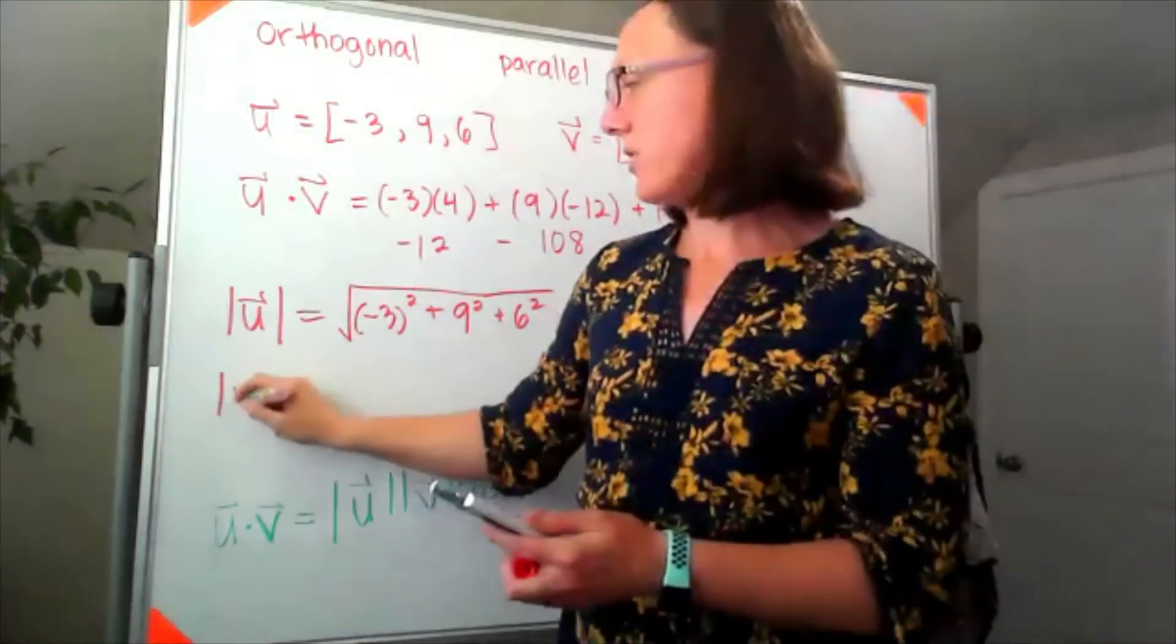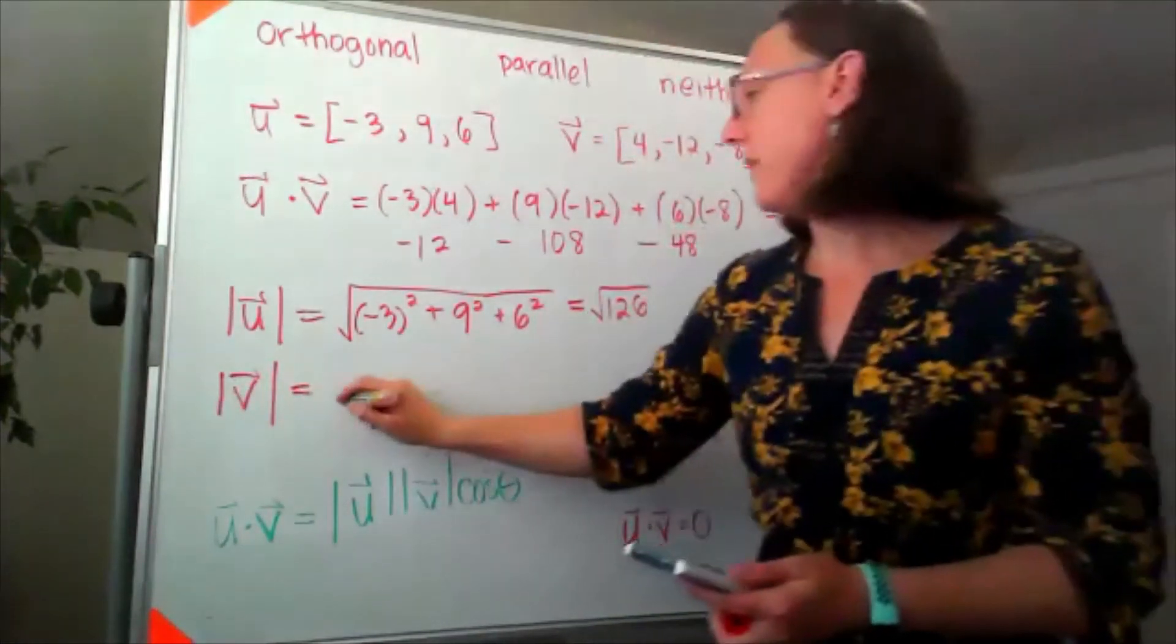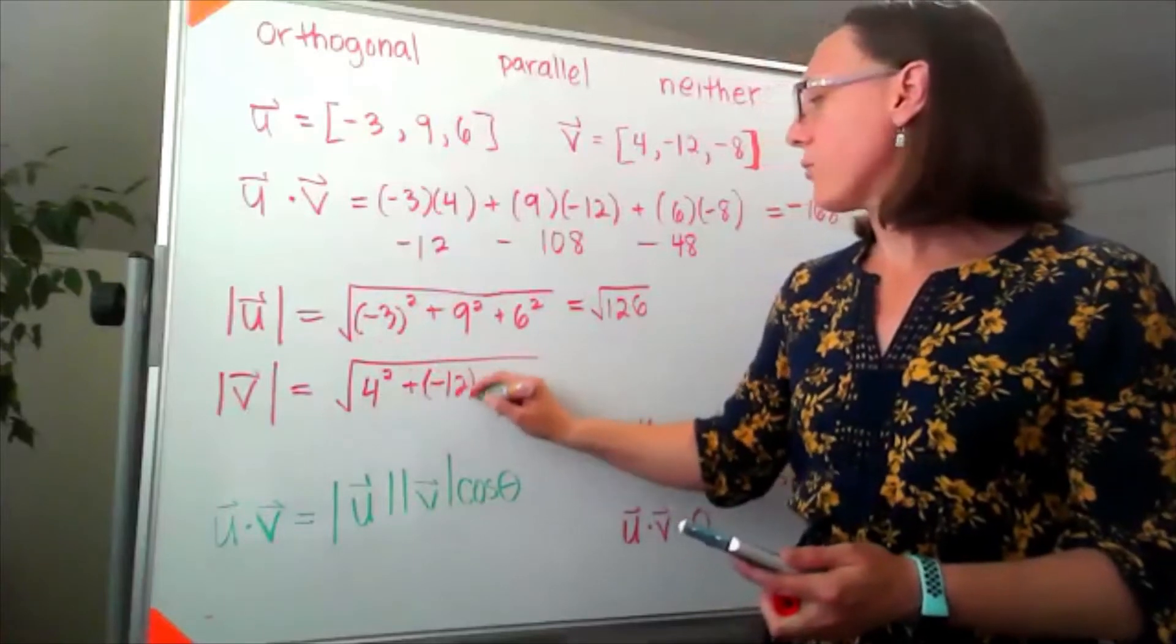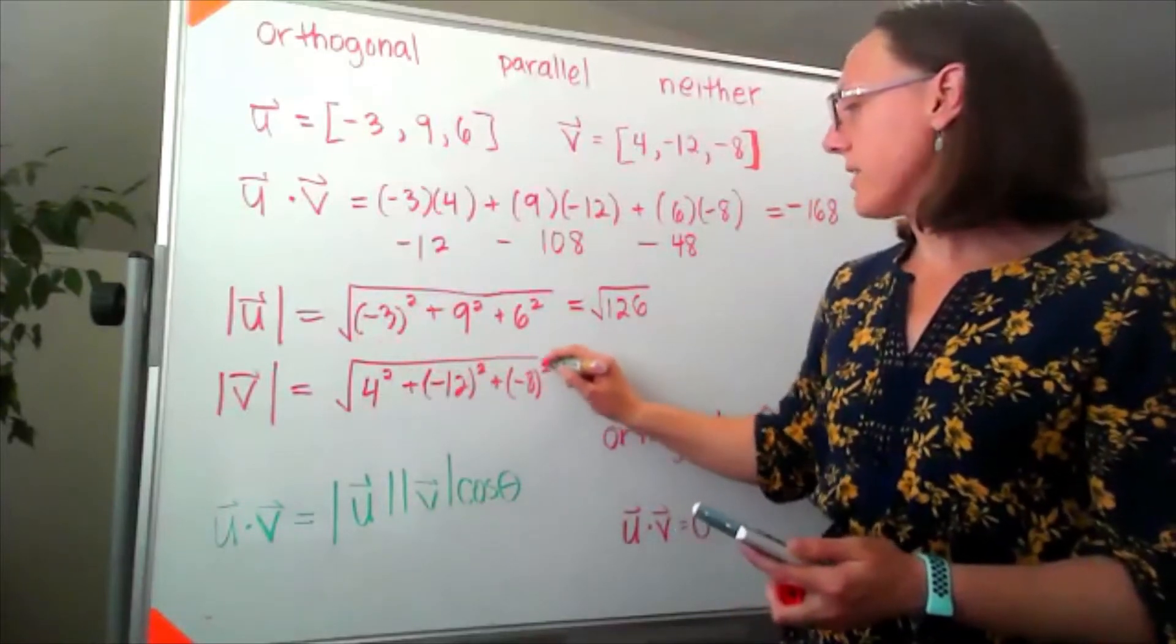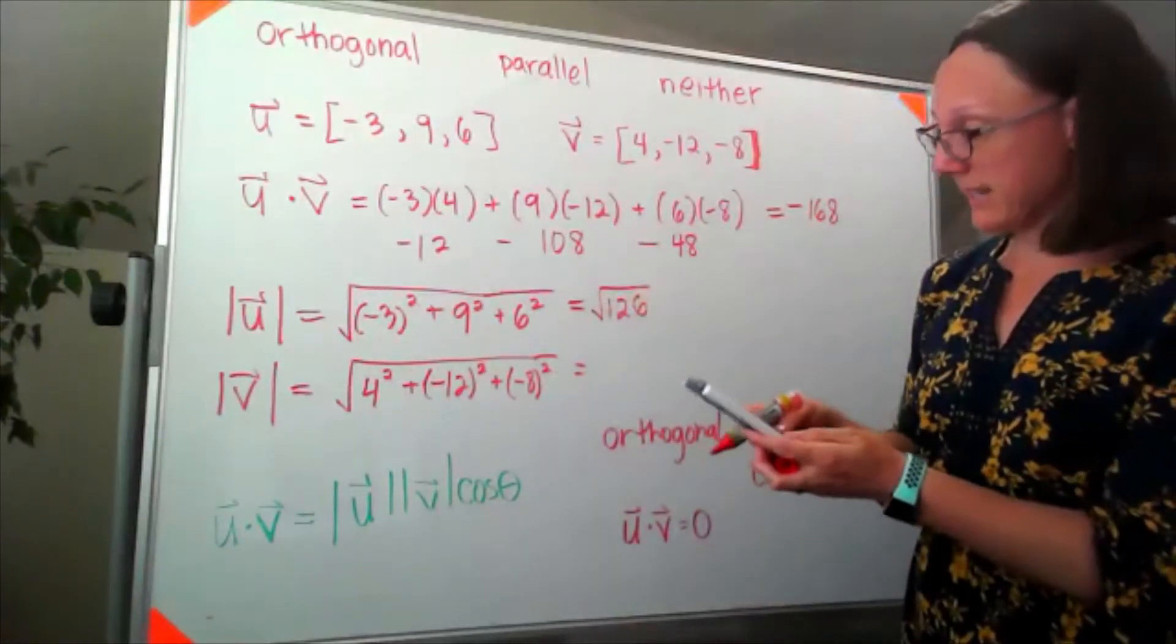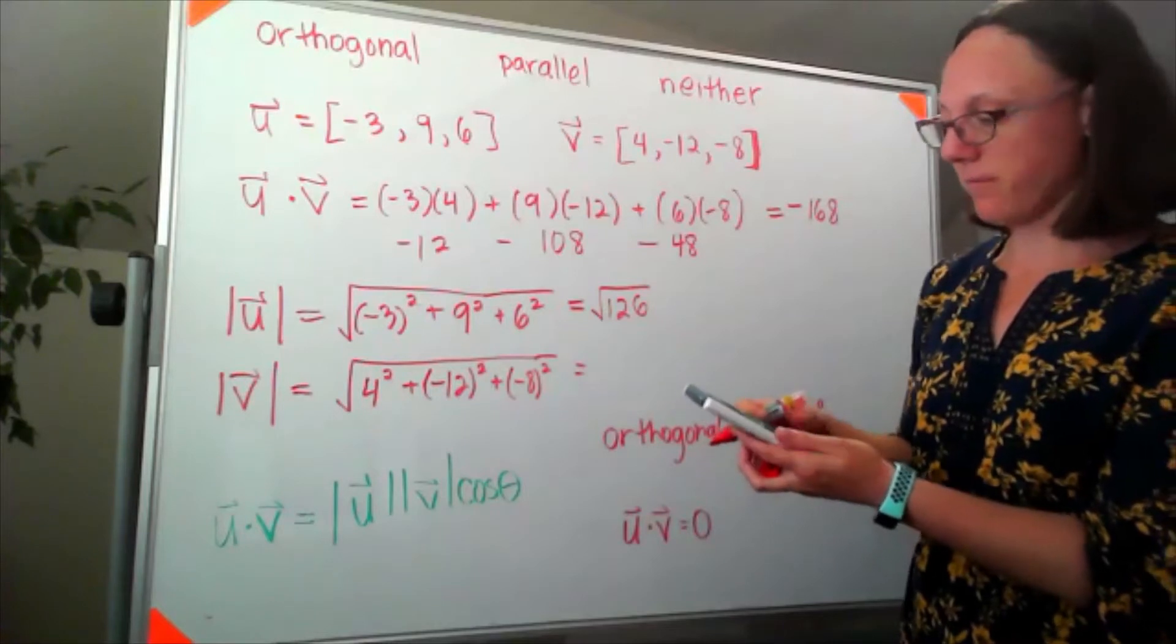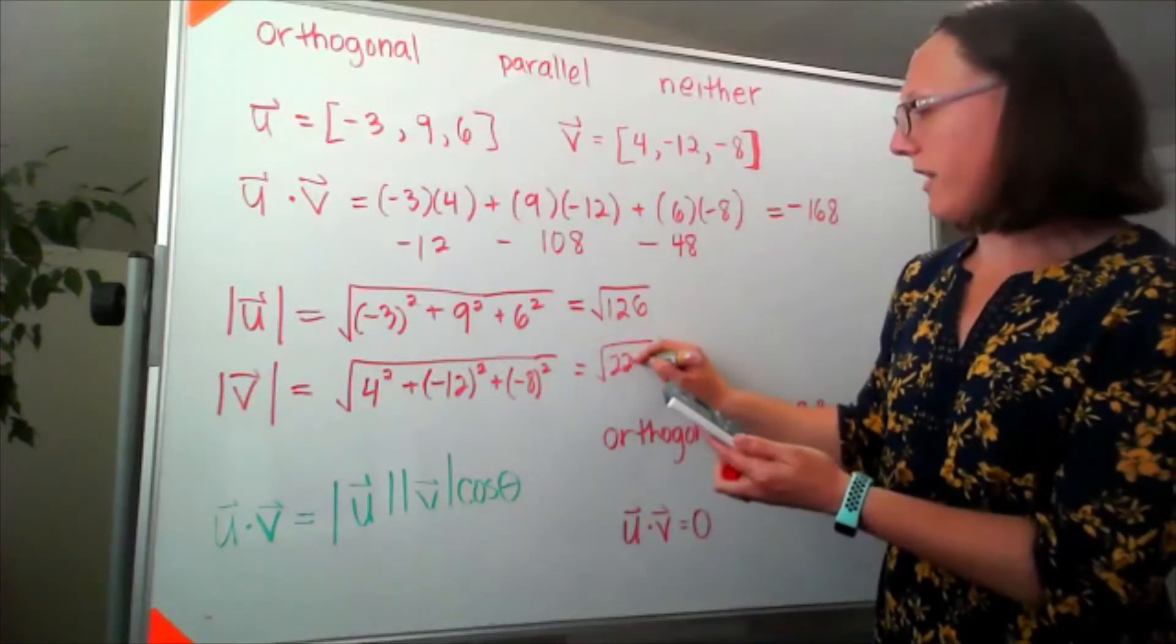Now let's look at the magnitude of v. So our magnitude of v I'd end up with the square root of 4 squared plus negative 12 squared plus negative 8 squared. So 4 squared that's 16. 12 squared is 144. 8 squared is 64. So I've got a square root of 224.